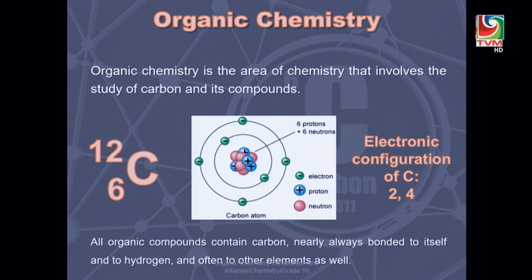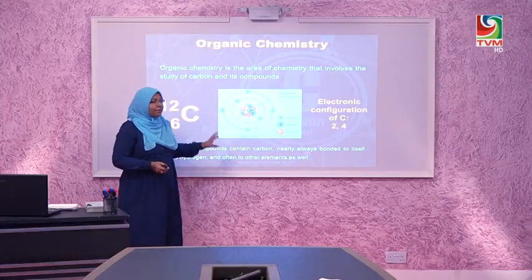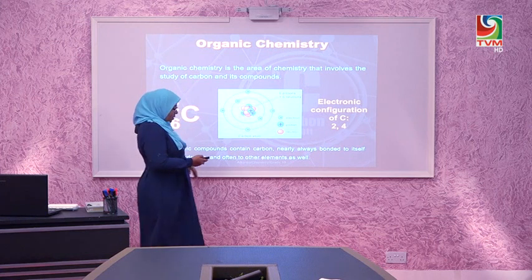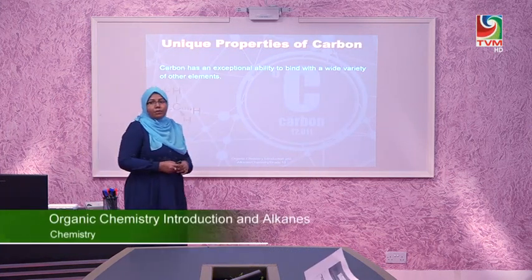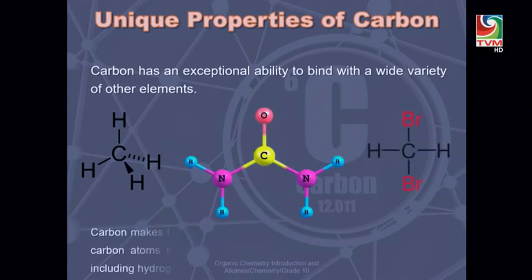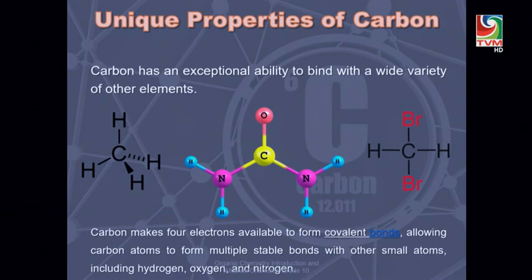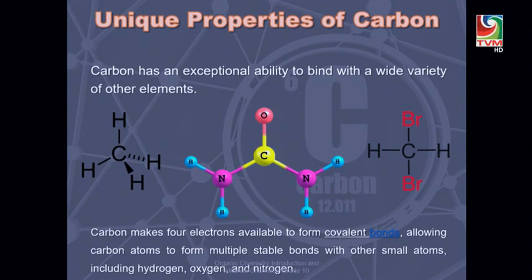The electronic configuration I have also written there. All organic compounds contain carbon; nearly always it comes with hydrogen, and often it will be mixed with other elements. This is the reason why carbon is the backbone of all organic compounds. Carbon has an exceptional ability to bind with a wide variety of other elements. Carbon can bond to hydrogen, oxygen, nitrogen, and bromine as well. Carbon makes 4 electrons available to form covalent bonds, giving it the highest covalency and forming numerous compounds.